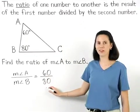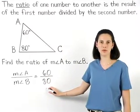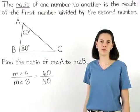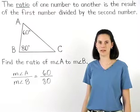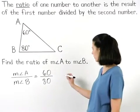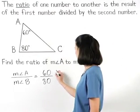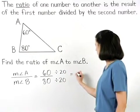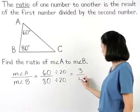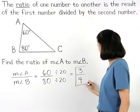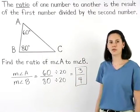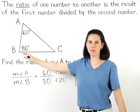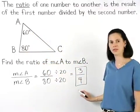Notice that 60 over 80 can be reduced because 60 and 80 have a greatest common factor of 20. So we divide both 60 and 80 by 20 to get 3 over 4. So the ratio of the measure of angle A to the measure of angle B is 3 fourths.